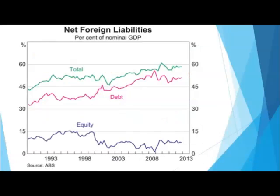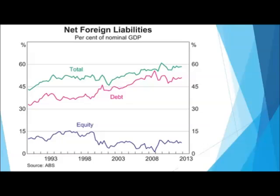Here's another graph on foreign liabilities, showing equity, debt, and total debt as a proportion of GDP. The current level of net foreign debt is about 50% of our total gross domestic product, which is high, and it has risen over the last 20 years. So our debt as a proportion of GDP seems to be getting bigger.